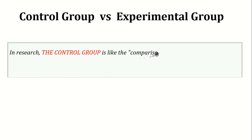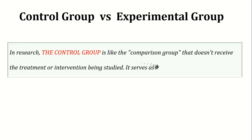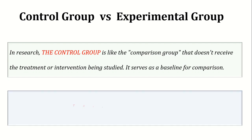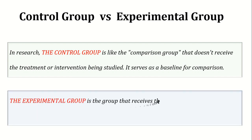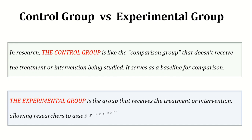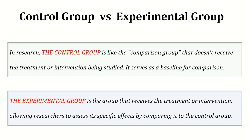In research, the control group is like the comparison group that doesn't receive the treatment or intervention being studied. It serves as a baseline for comparison. On the other hand, the experimental group is the group that receives the treatment or intervention, allowing researchers to assess its specific effects by comparing it to the control group.